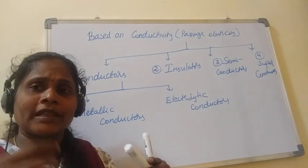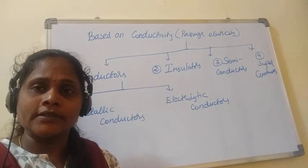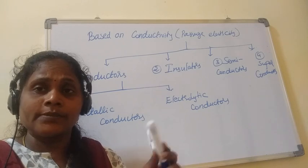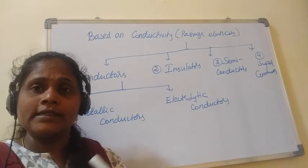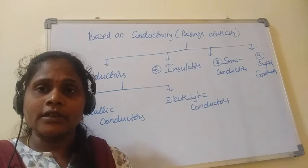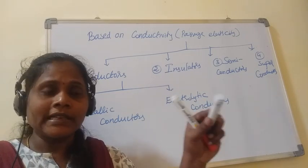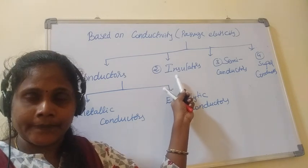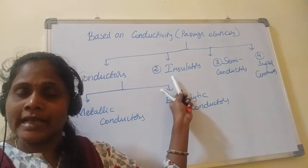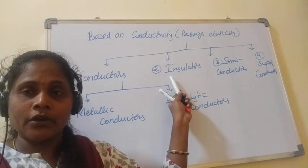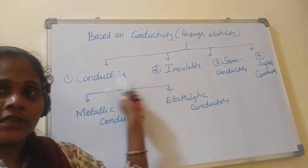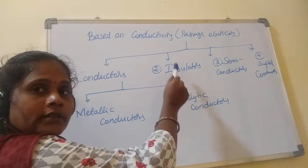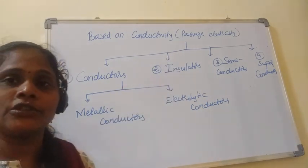Whereas if you burn a stick from one edge and hold the other end, you won't feel the heat even though it is burning — because the stick is a non-conductor of heat. Similarly, you don't get an electric shock from a stick, meaning electricity passage does not happen through it. Therefore, substances which do not allow the passage of electricity through them are called insulators. Conductors allow passage; insulators do not.